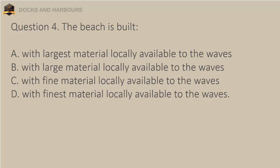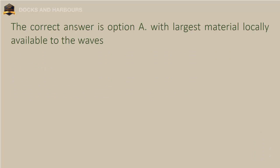Question 4. The beach is built: a. With largest material locally available to the waves, b. With large material locally available to the waves, c. With fine material locally available to the waves, d. With finest material locally available to the waves. The correct answer is option A: With largest material locally available to the waves.